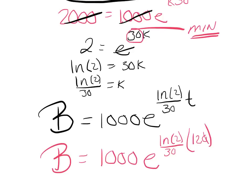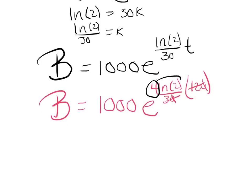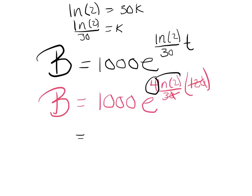So I'm finding the bacteria e^(ln(2)/30 times 120). And let's see, I can kill that 0 now and make that 4ln(2). I think I can do this in my head here without a calculator. This 4 can move up to the exponent. I could say this is e^(ln(2^4)). That zaps out, and that gets me 16,000 bacteria.